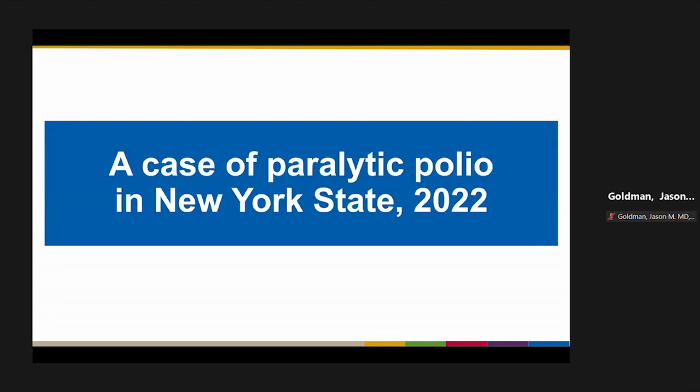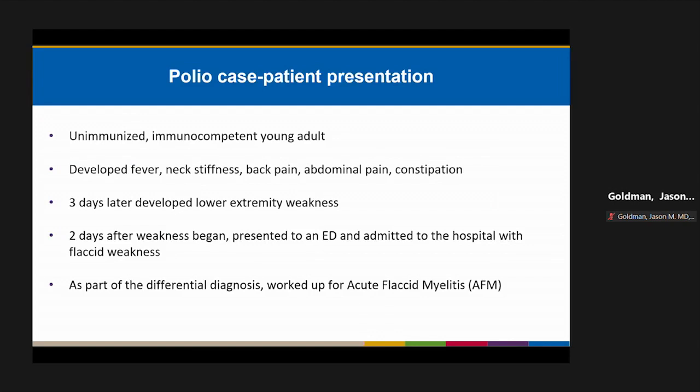Turning to recent history: a case of paralytic polio occurred in New York State in 2022. An unimmunized, immunocompetent young adult developed fever, neck stiffness, back pain, abdominal pain, and constipation. Three days later, this person developed lower extremity weakness. Two days after that, the patient presented to an emergency department and was admitted with flaccid weakness, and was worked up for acute flaccid myelitis, also known as AFM.